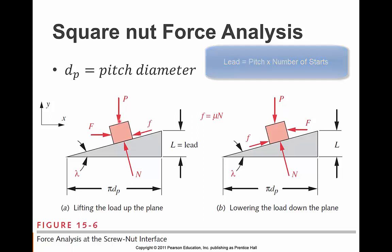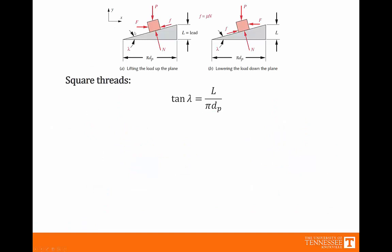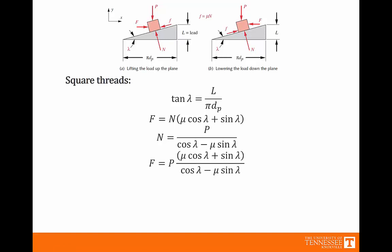As we discussed before, the lead is equal to the pitch times the number of starts. P is the load that we're trying to lift. F is the force that we're generating because of the torque that we're applying. And this F is the frictional force that's opposed to it. N is the normal force that keeps everything. And N is going to be a combination of the torque applied and P. I also want to note that this angle lambda is defined by definition. The tangent of lambda is equal to the lead divided by pi times the pitch diameter.